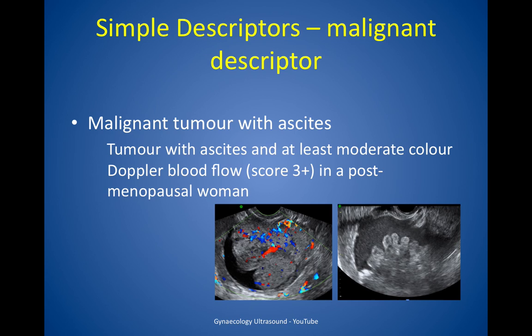This simple descriptor is a malignant descriptor: a malignant tumour with ascites where you can see a tumour with ascites and at least moderate colour blood flow — a score of 3 or 4 — in a post-menopausal woman. On the left you can see an irregular solid lesion with strong blood flow, and on the right extensive ascites.